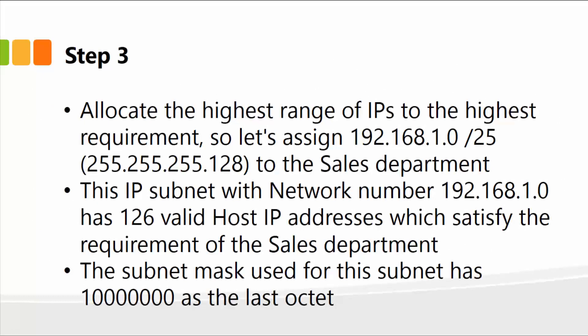Step three is to allocate the highest range of IPs to the highest requirement. Sales has 100 computers, so assign 192.168.1.0/25 to the sales department. This IP subnet with network number 192.168.1.0 has 126 valid host IP addresses, which satisfies the requirement of the sales department, which has only 100 users. The subnet mask used for this department has one followed by seven zeros in the last octet based on the bits.